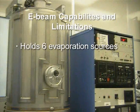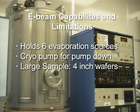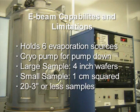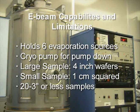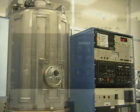The E-beam evaporator can hold up to six different evaporation sources. A cryopump is used for rapid pump-down. The E-beam can process samples in size from 4-inch wafers to less than 1-centimeter-squared samples using the process plate. It can also process 2 3-inch or less samples using the process dome. It is also to be noted that the backside heater is disabled.